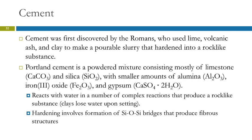Then there's also cement, which is pretty important. It was first discovered by the Romans. They used lime — not the fruit — volcanic ash, and clay, and made a pourable slurry that would harden into a rock-like structure. It's a thick liquid that you can form how you want, and when it dries it becomes very hard and rigid.